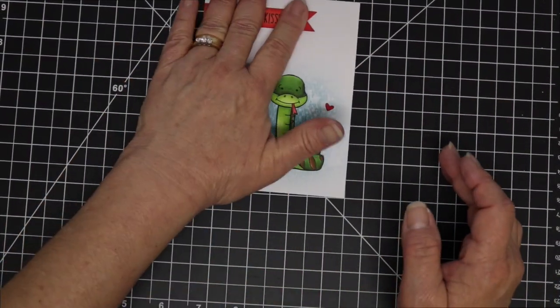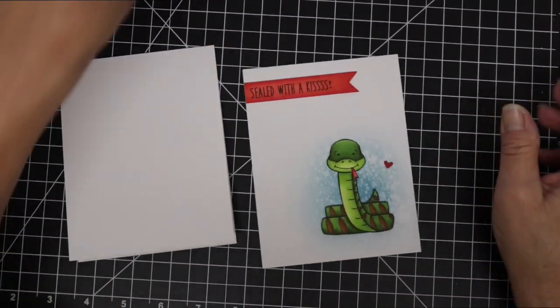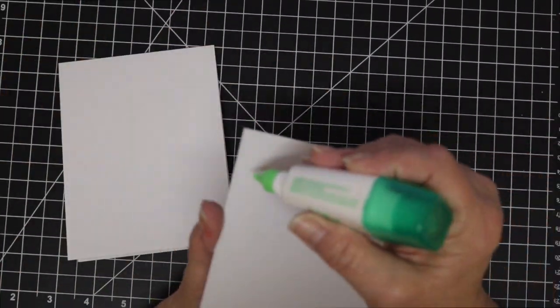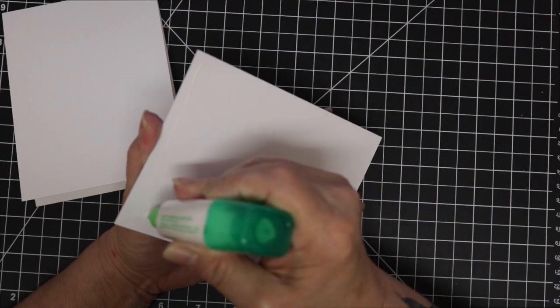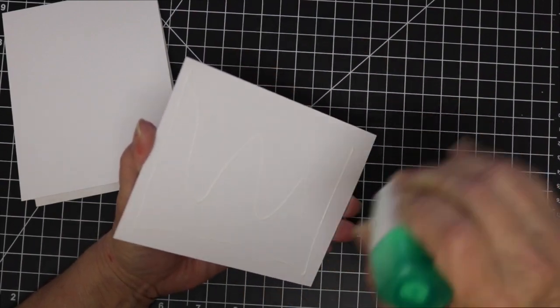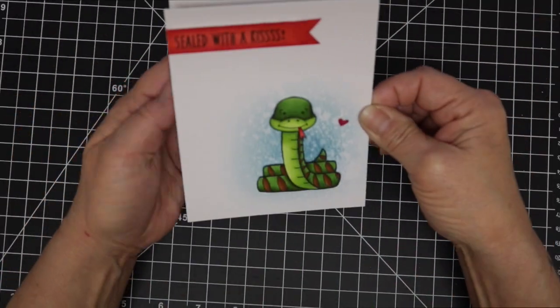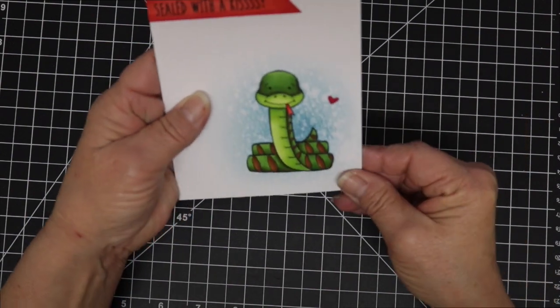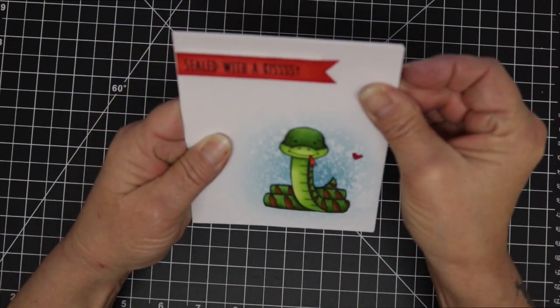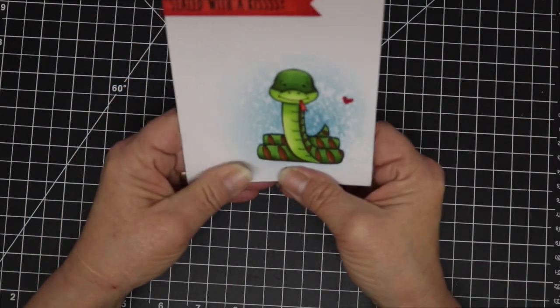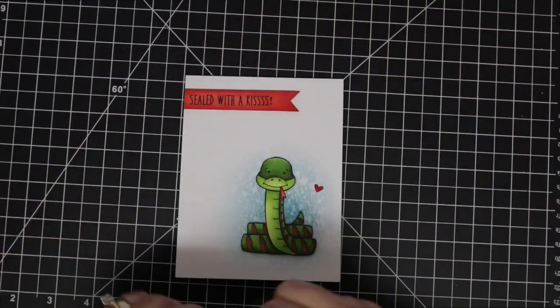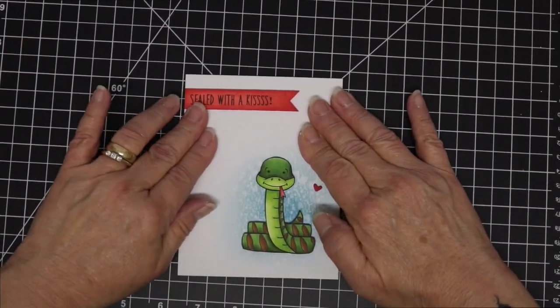And then I'm going to get just a standard A2 top folding card and use a little bit of Tombow on the back of my panel and place that onto my card base. And that's going to be it for today. Thanks for joining. And I will see you again soon. Bye now.